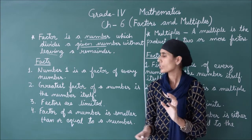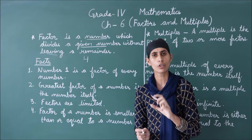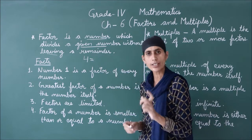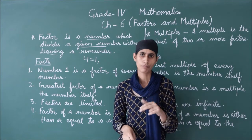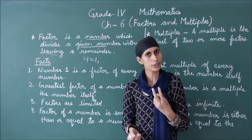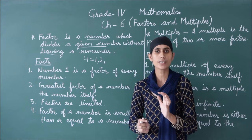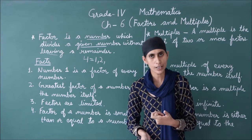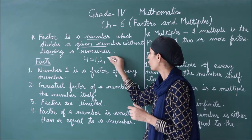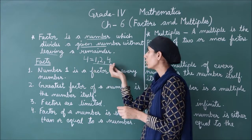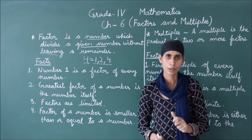How do we understand this? Suppose we have the number 4. Which numbers divide 4 completely? 1 is a factor of 4. Next, 2 — 4 appears in the 2 times table (2 × 2 = 4), so 2 is also a factor. If we check 3, 4 does not appear in the 3 times table, so dividing 4 by 3 leaves a remainder — so 3 is not a factor. Next, 4 × 1 = 4, so 4 is also a factor. So 1, 2, and 4 are the factors of 4.